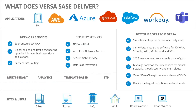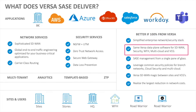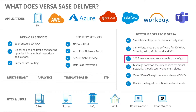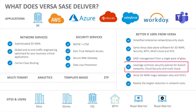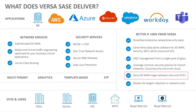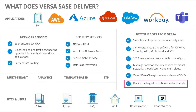Our value proposition is that by doing this all with Versa, we can dramatically simplify the enterprise network and security stack. We can have the same Versa data plane software for SD-WAN, security, work from home, and multi-cloud. We can have SASE management all through a single pane of glass, and we can leverage common security policies across all sites and work from anywhere. We have Versa SD-WAN magic between all the sites and the cloud gateways.